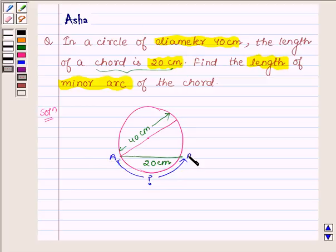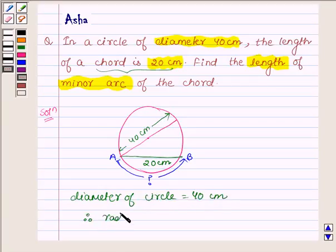Let the chord be denoted by AB. And here we are given that diameter of circle is equal to 40 cm. Therefore, radius will be equal to 40 upon 2, that is 20 cm.